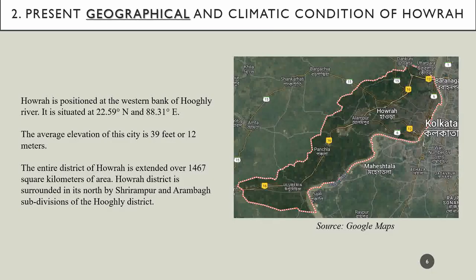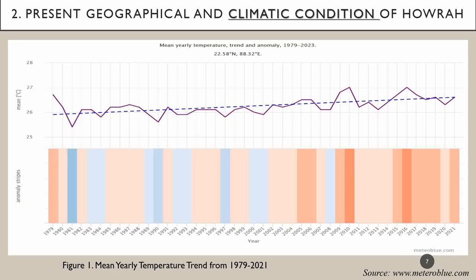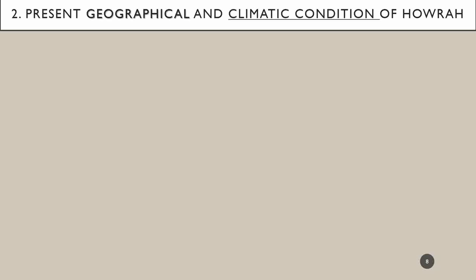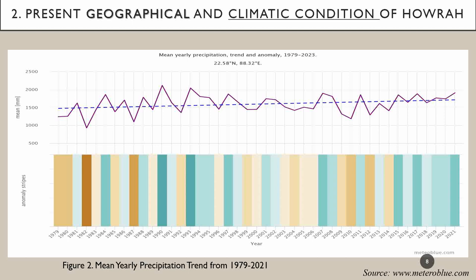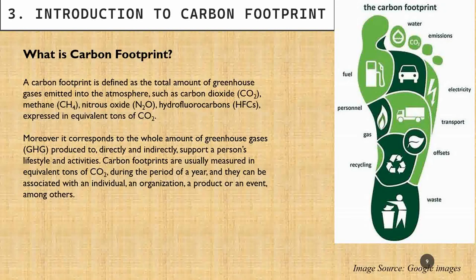Talking about the present geographical and climatic condition of Howrah, because the hostel which I have taken is situated in Howrah — it's nearby Kolkata and Hoogli Bridge. Looking at the climatic condition of the past 30 years, you can see there is a growth rate in the mean yearly temperature. It also shows the mean precipitation trend, which is also due to climate change itself.